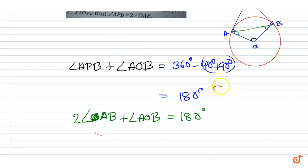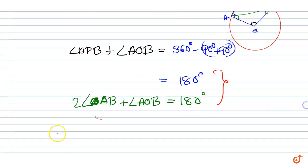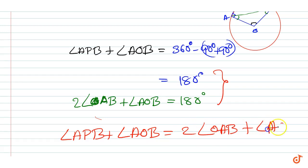Therefore, from these two equations we can write, angle APB plus angle AOB equal to twice angle OAB plus angle AOB.